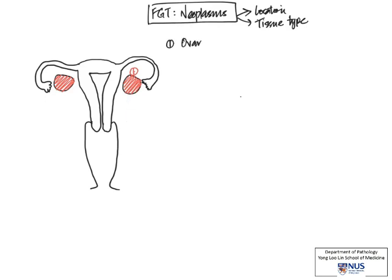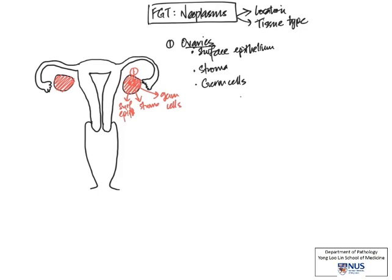If you recall your histology of the ovaries, we can divide them into three main components: the ovarian surface epithelium, which gives rise to epithelial type tumors and carcinomas; the ovarian stroma, which gives rise to sex cord stromal tumors; and of course the germ cells. For the surface epithelium, the tumors actually range from benign to borderline to carcinoma, and these are often quite cystic and large.